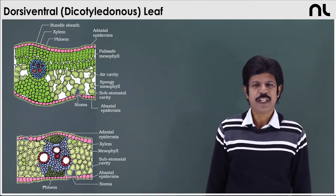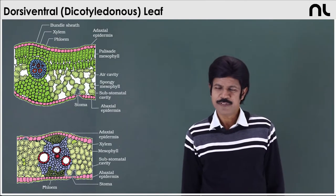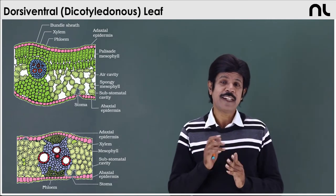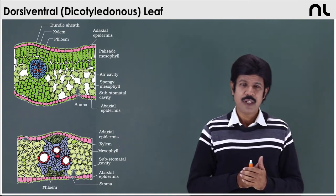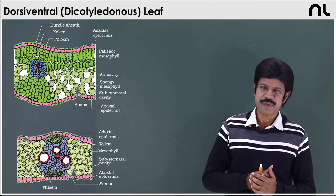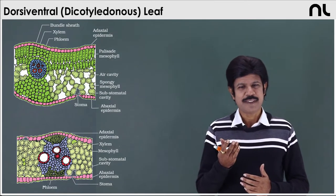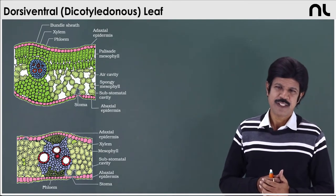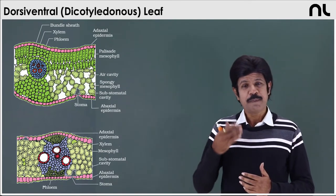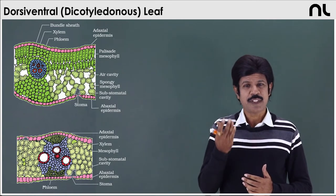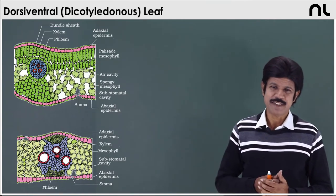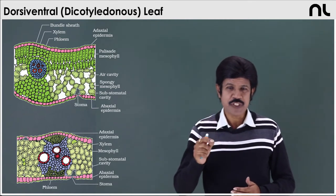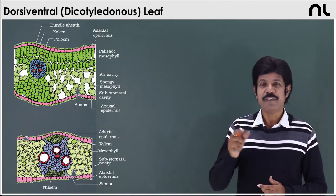In the case of the dicot leaf, it is externally as well as internally differentiated. Externally, the upper surface is dark green and the lower surface is light green. Internally, towards the upper epidermis it is having palisade, and the lower side has spongy tissue. So externally and internally it is differentiated — it is the dicot leaf, a bifacial leaf.